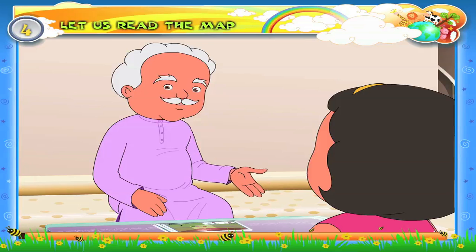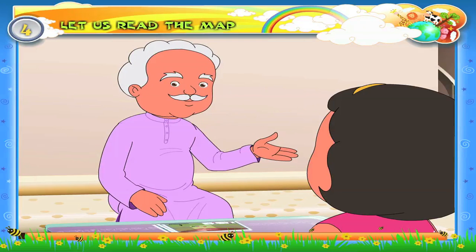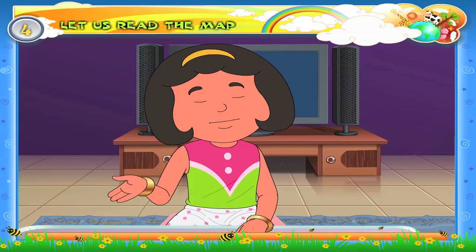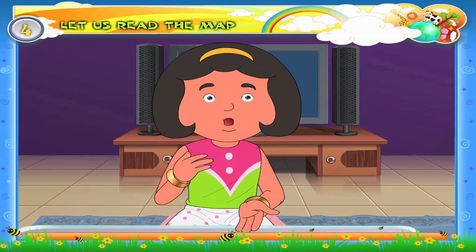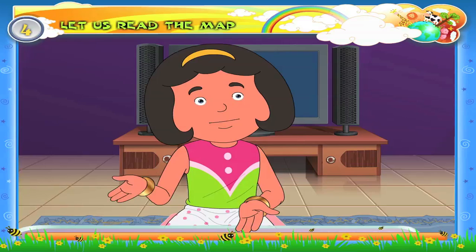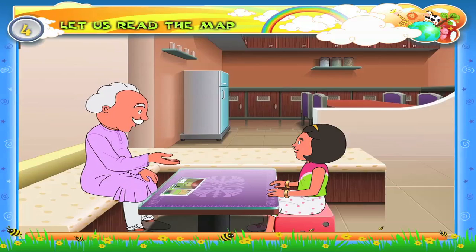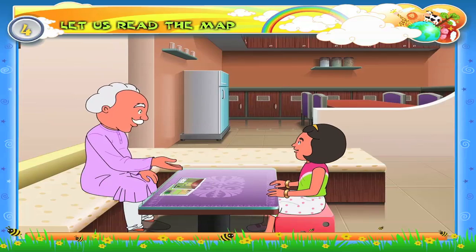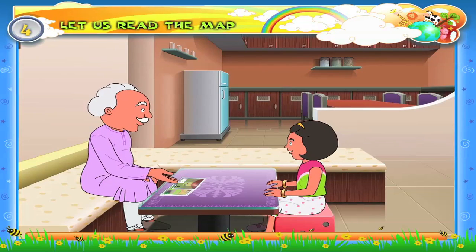Now go and get ready for Revthi's birthday party. Dadaji, it is tomorrow, not today. Is it so? Take care of this map — we cannot reach Revthi's house without this.